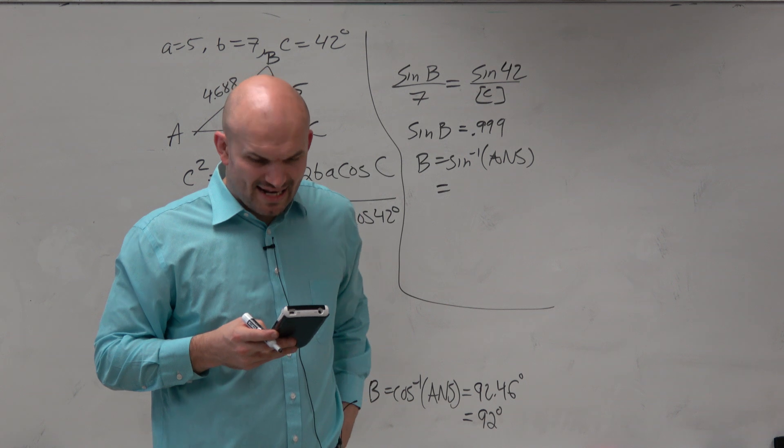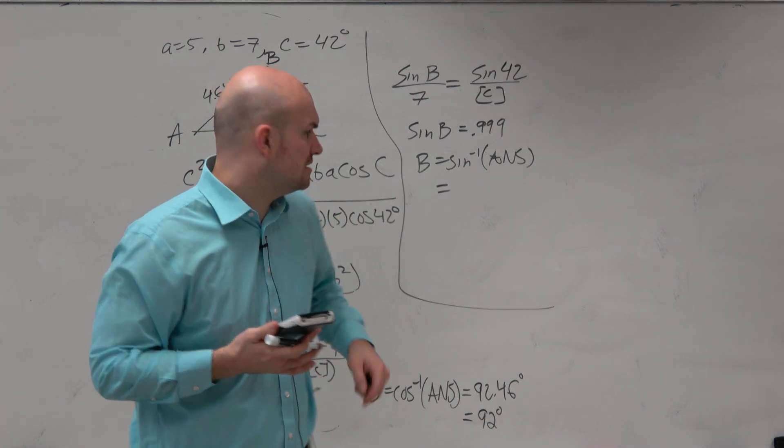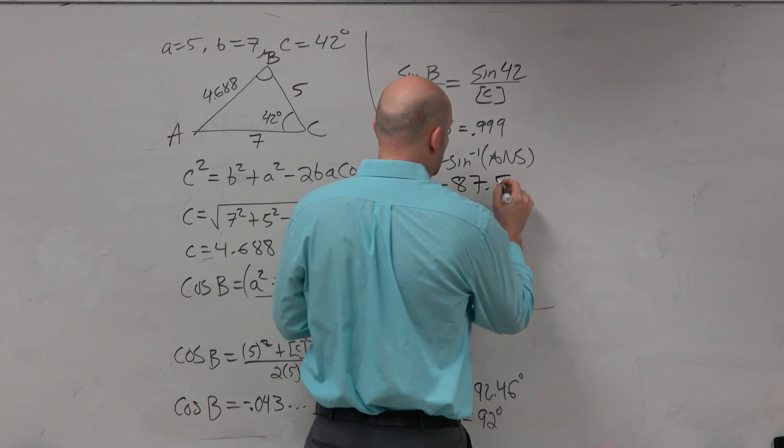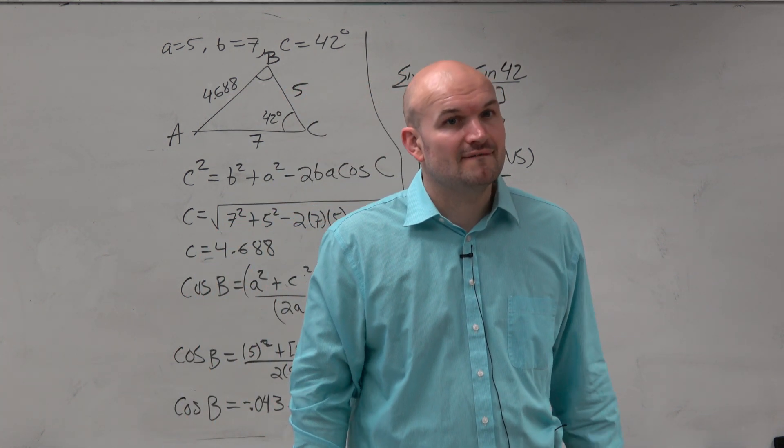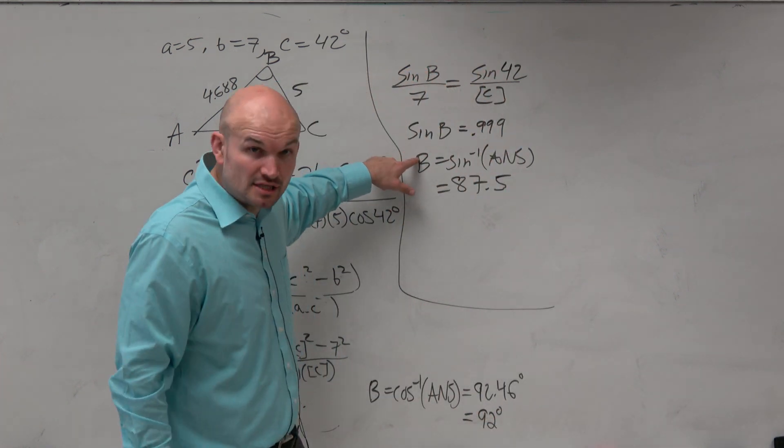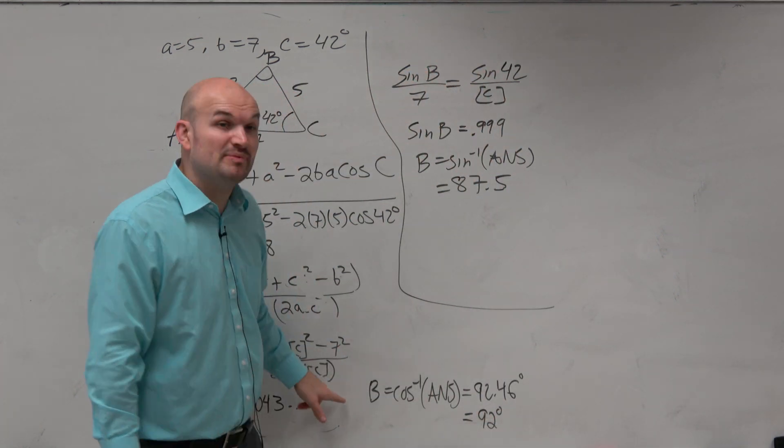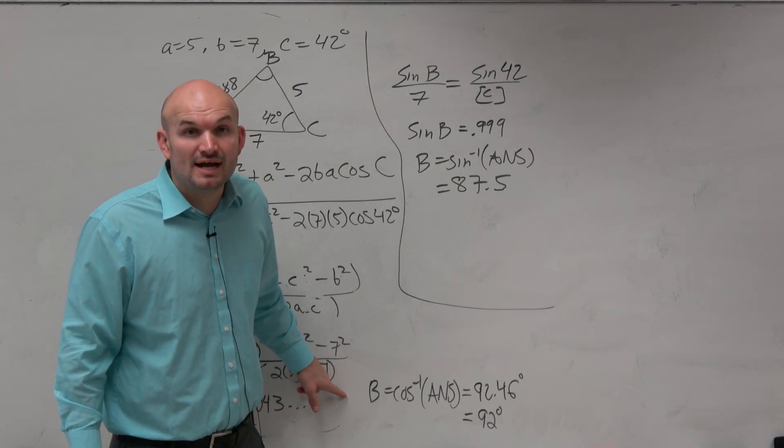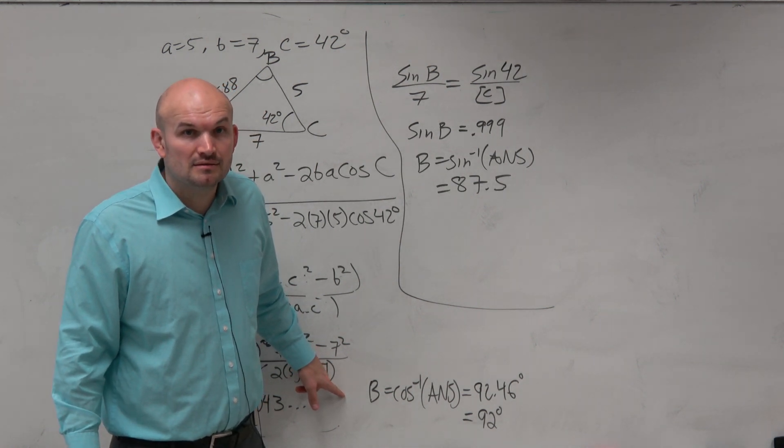And I get 0.999. So therefore, B equals sine inverse of the last answer. Oh, crap. I get 87.5. Well, that's the wrong answer. Yes? Huh? Well, they're not the same. I just solved for B using the law of sines. And I just solved for B using the law of cosines. It's not the same answer. Yeah, I know that. So which one's right? I don't know. That's why that's for you.